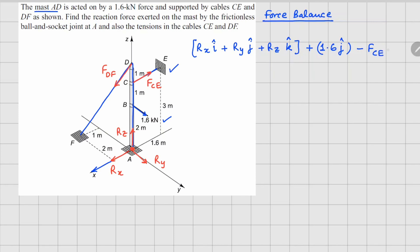The F_DF force is written as F_DF times its unit vector. All of these forces must sum to zero.